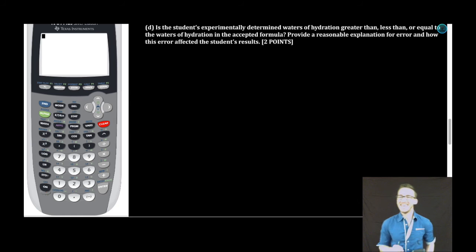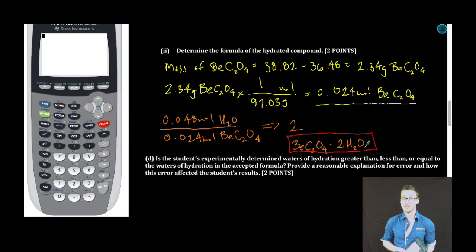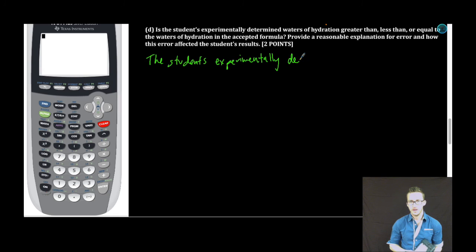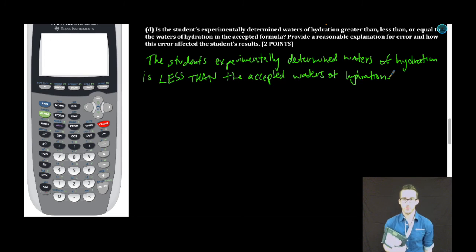Final part to this free response, and it's a doozy. Now, the college board really likes to ask these types of questions on the free response. It gets your noggin moving and thinking about the experiment. And as you think about these types of questions, think about the actual measurements that were made in the lab. Think about the data. It says, is the student's experimentally determined waters of hydration greater than, less than, or equal to the waters of hydration in the accepted formula? Provide a reasonable explanation for error and how this error affected the student's results. So let's first answer the question greater than, less than, or equal to. Experimentally, this student determined the compound to have two waters of hydration. But we know the compound should have three waters of hydration. Easy enough, the student's experimentally determined waters of hydration is less than the accepted waters of hydration. So there's a point for you right there. Answer the question.